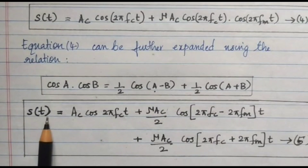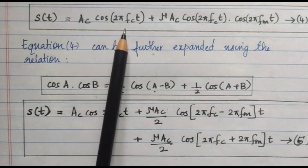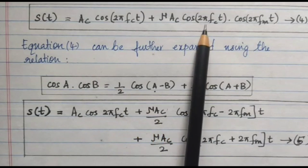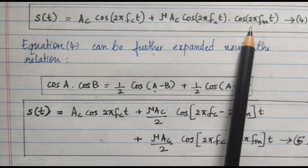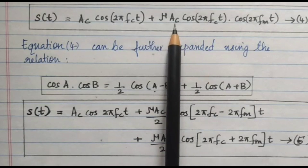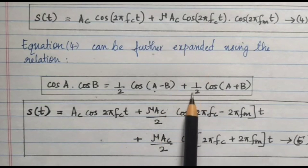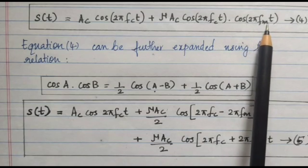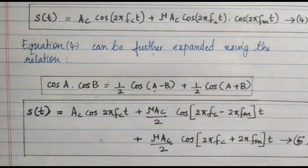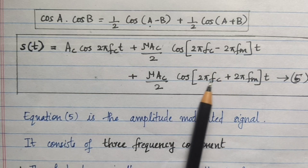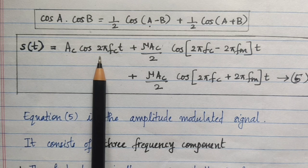Applying the identity, we can write S(t) = AC cos(2π FC t) + (μ AC / 2) cos(2π FC − 2π FM)t + (μ AC / 2) cos(2π FC + 2π FM)t. This is equation number 5, and it has three terms: the first frequency component, the second frequency component, and the third frequency component.